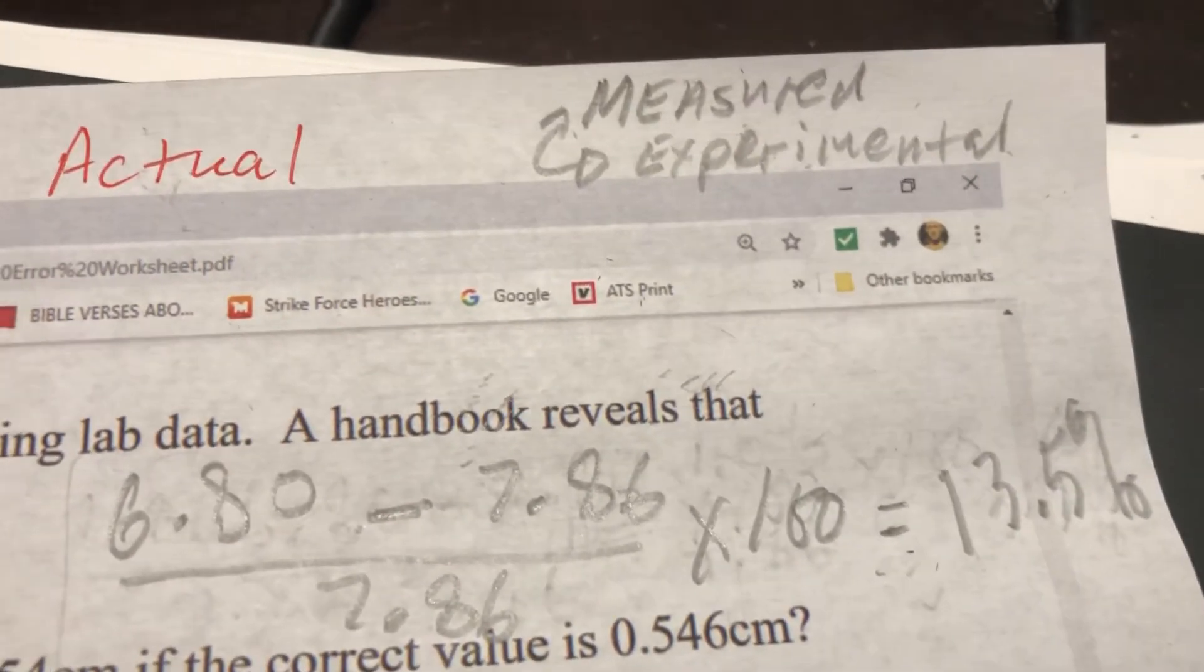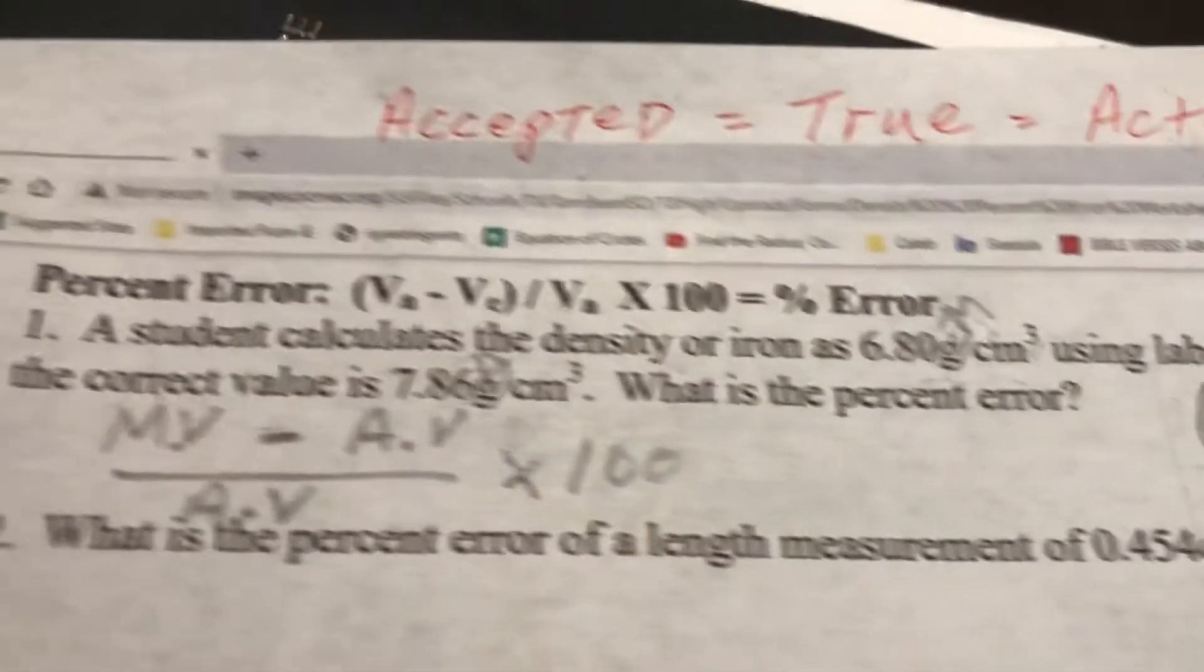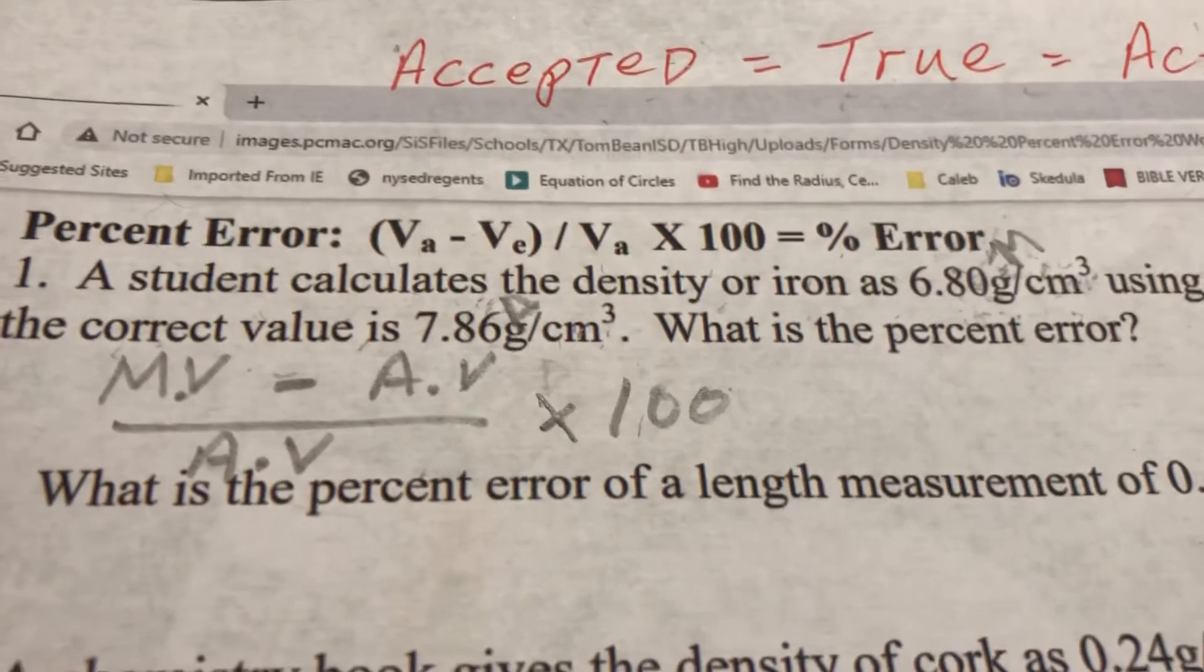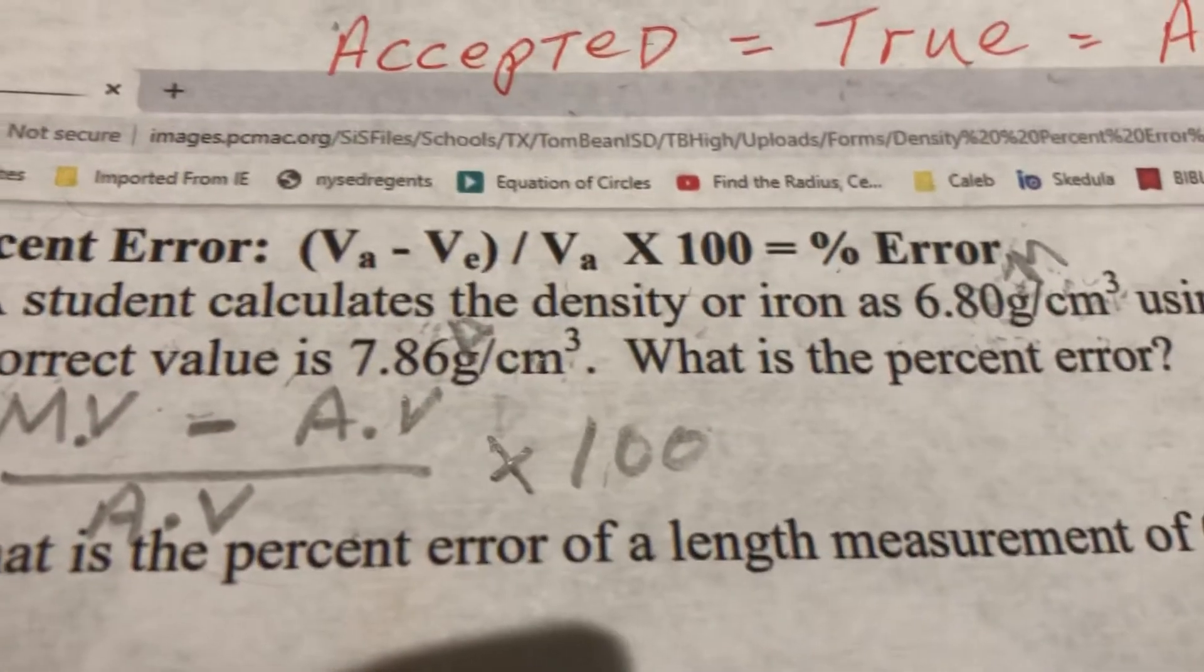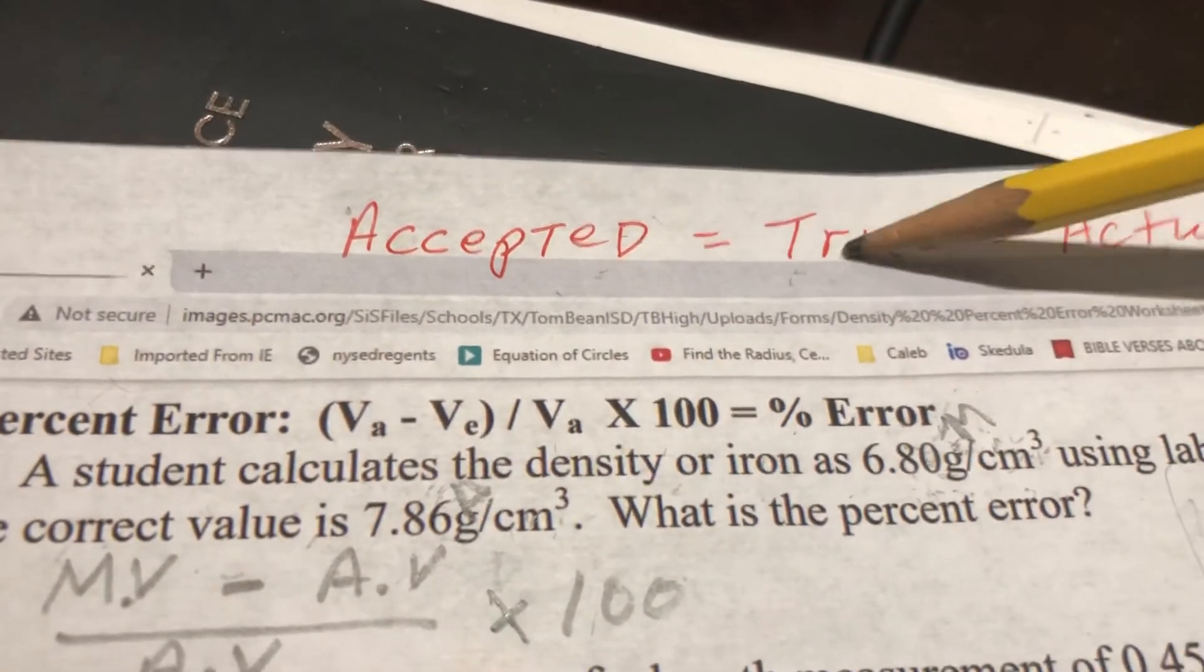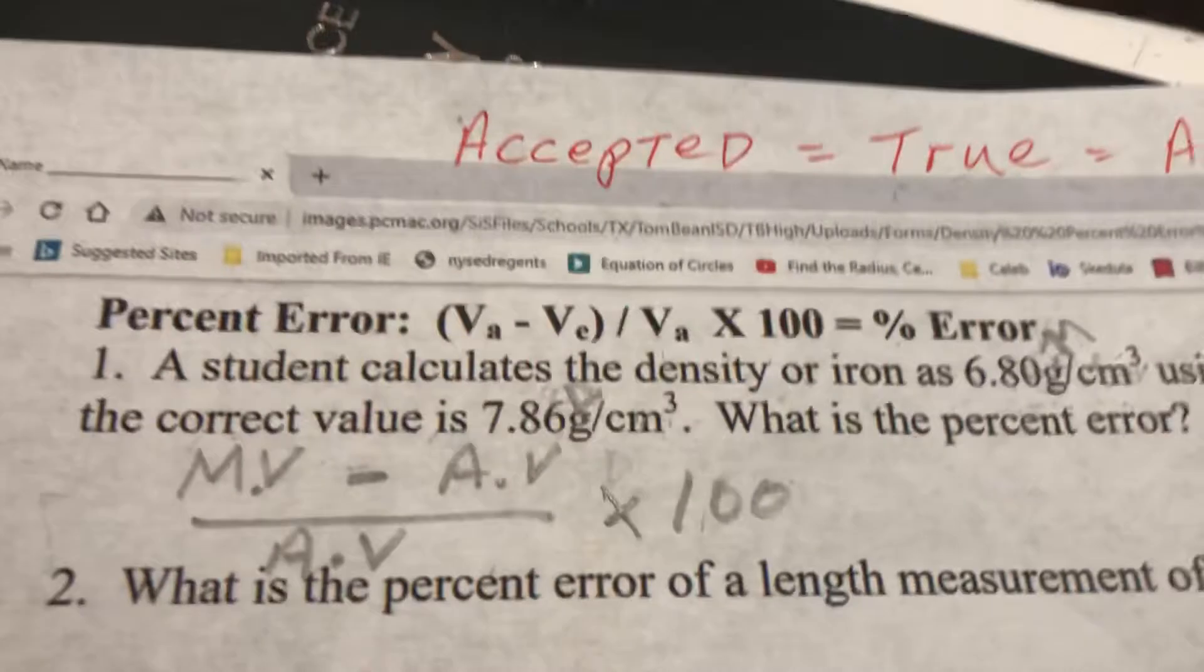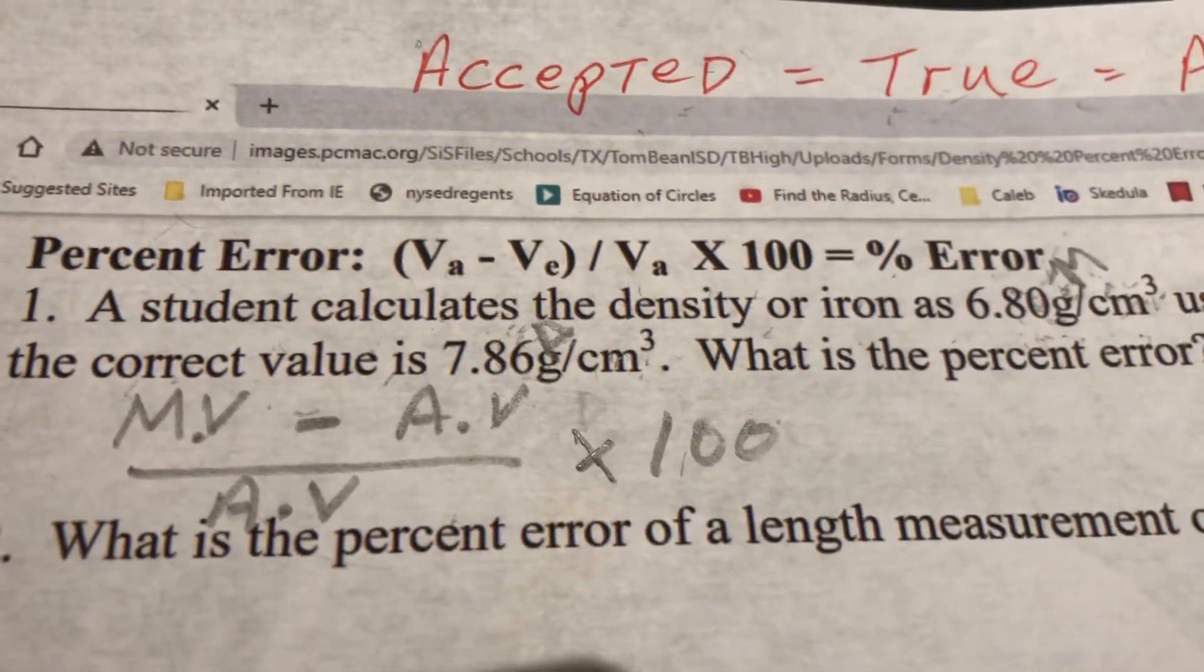The only thing to worry about in this problem, guys, is figuring out who did the experiment. That's your experimental or measured value and what the accepted actual or true value is and that's it. So it's not really a hard problem, folks. You got this.